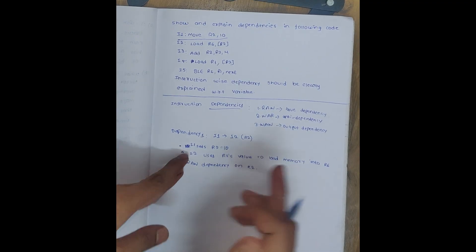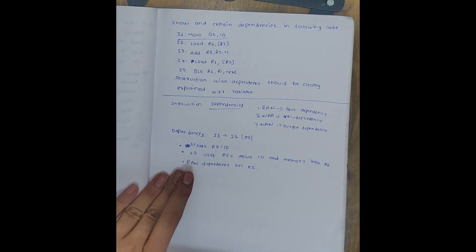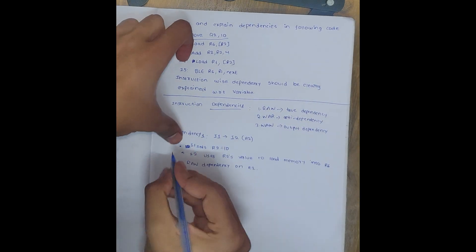So like this I am comparing. Now let me go to the second dependency. Here there are four dependencies. I will be writing dependency 2 now. Dependency 2 is I2 to I5.